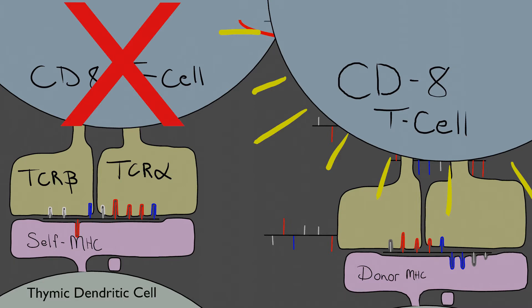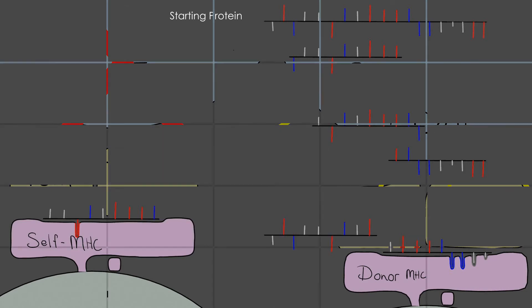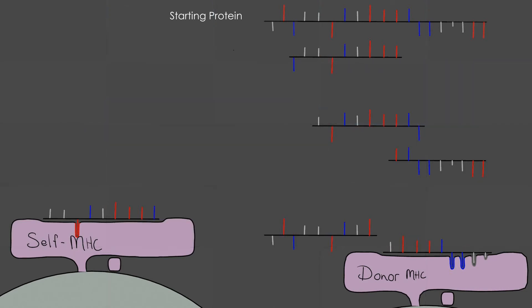Recipient T cells will think that the peptide fragments presented on the MHC class 1 from the donor are foreign and will attack the cells. They have never been exposed to this particular fragment of the protein before. Notice that the self-protein was the same the entire time. All that changed was the binding site in the MHC and which fragment of the protein was presented to the T cells.